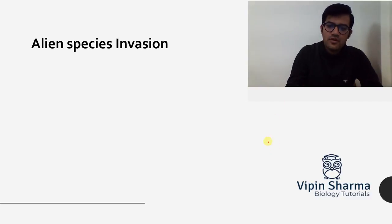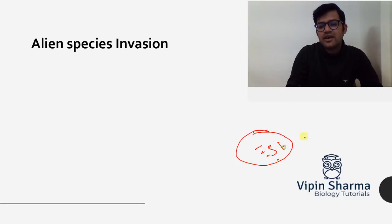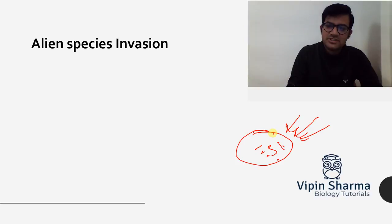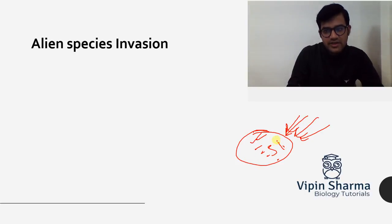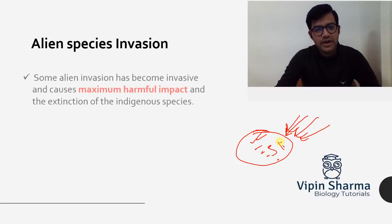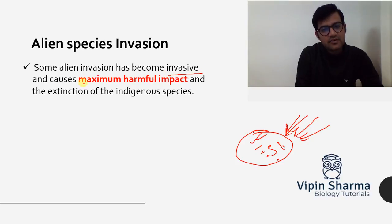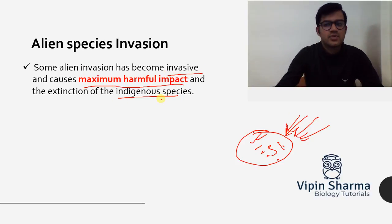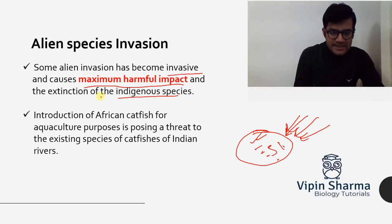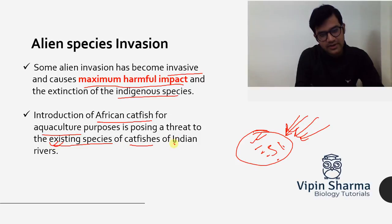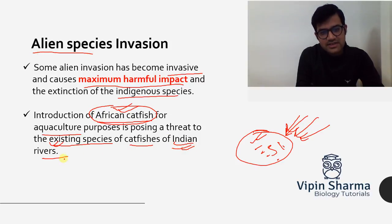Another cause of biodiversity loss is alien species invasion. An ecosystem has native species living in it, but when alien species enter and are harmful to the native ones, they destroy the indigenous species. Some alien species become invasive and cause maximum harmful impact on indigenous species. An example is the introduction of African catfish in Indian rivers for aquaculture, which poses a threat to the existing indigenous catfish species that naturally live there.